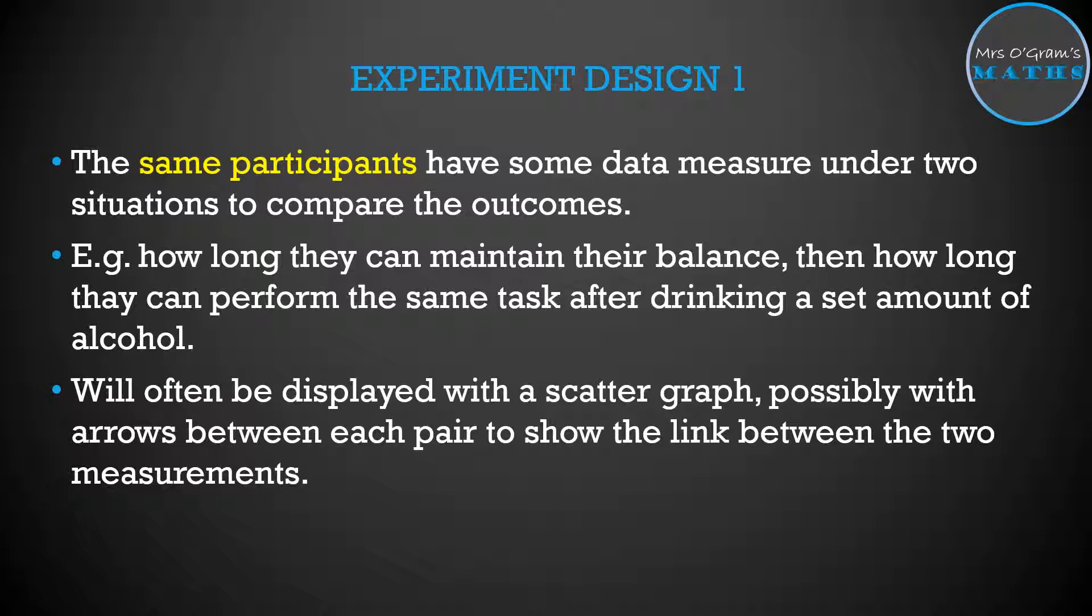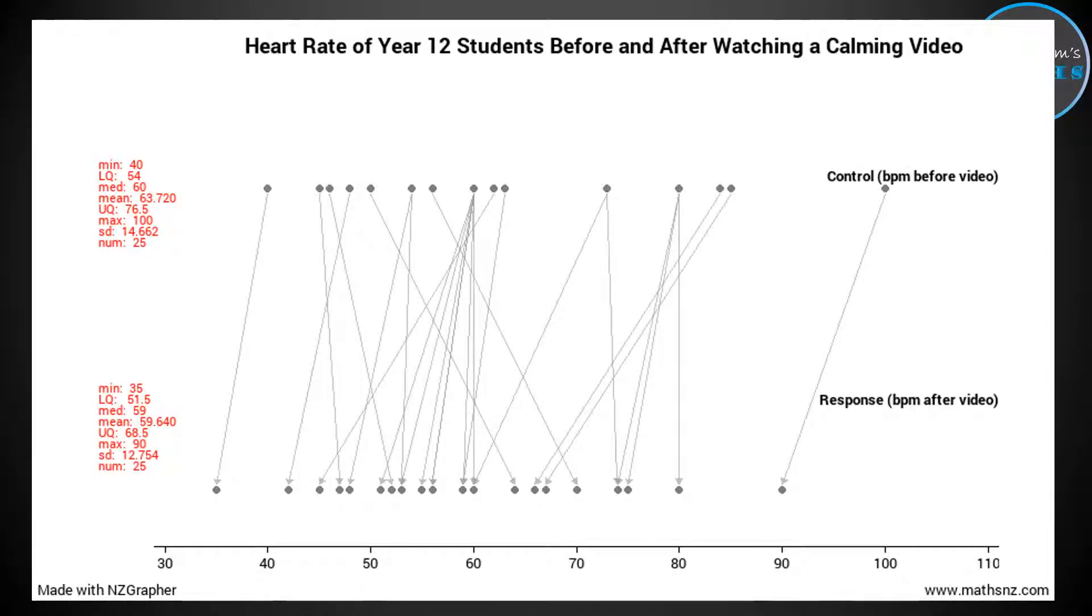This will often be displayed as a scatter graph and possibly with arrows between each pair of dots of data that show the link between the two measurements for the same person. If you have an arrow graph, that arrow is showing that person's or that participant's, because of course it might not be people, it could be mice or something, but the participant in that experiment, if you've got an arrow on there, it's showing their result under one condition and then their result under the other condition and an arrow between them. I forgot to say, this is called a paired comparison. You're pairing up somebody's result from one situation to their result in another situation.